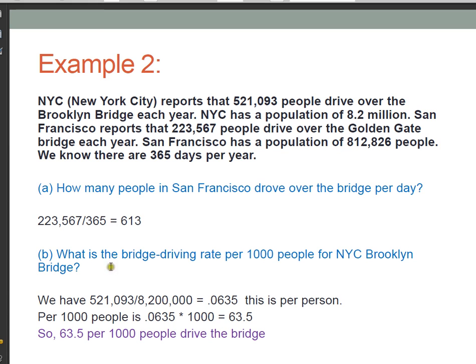Now, the second question says, what is the bridge driving rate per 1,000 people for the New York City Brooklyn Bridge? Well, to answer this question, we actually need two steps. First, we need to figure out what the bridge driving rate is in general. In other words, how many bridge crossings are there per person? Once we know the per person, we can multiply that by 1,000 to get what it is per 1,000 people. All right, so which numbers do we need to use now? Well, we need the bridge driving for New York City Brooklyn Bridge. So let's get some of those pieces of information. We know that 521,093 people drive over the Brooklyn Bridge each year.